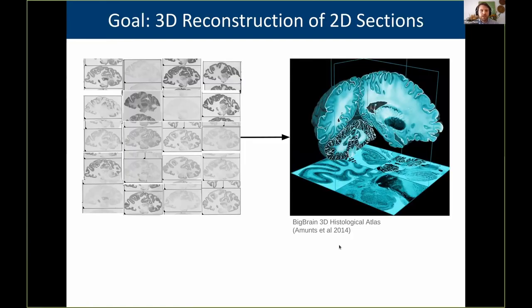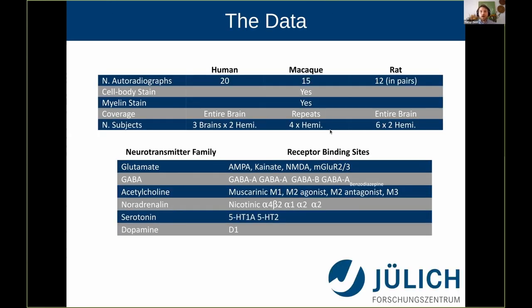The goal of the project is that we have all of these different autoradiographs and we'd like to build 3D atlases like the BigBrain with them. The data is quite unique, and it has expanded since last time — we now have human data, but also macaque and rat data, which we're reconstructing. These autoradiographs reflect the main neurotransmitter families: glutamate, GABA, acetylcholine, and so on.